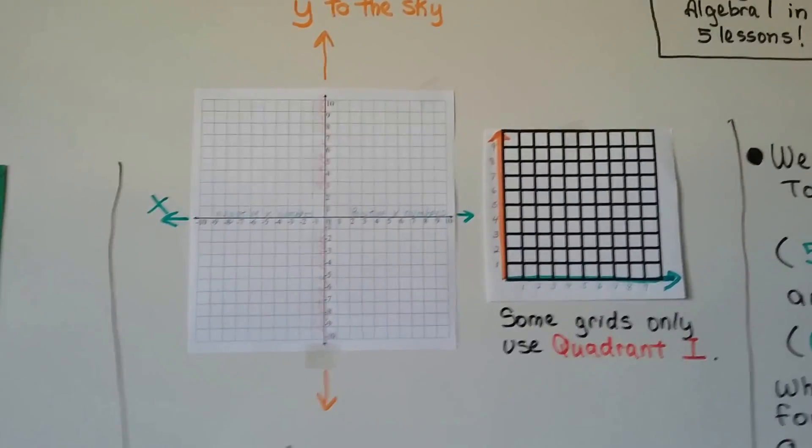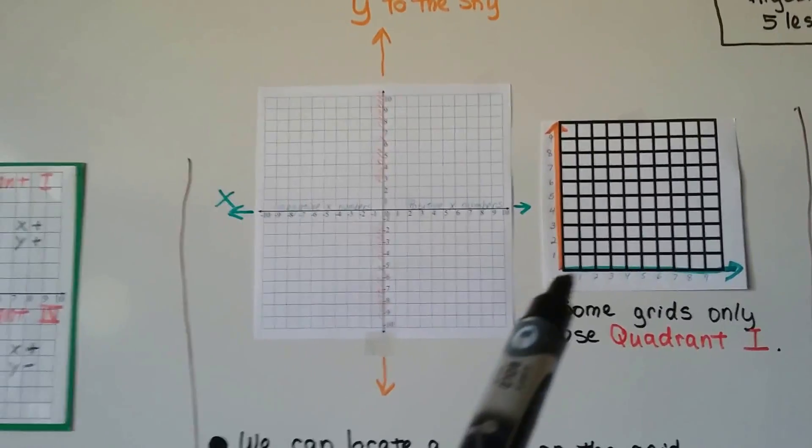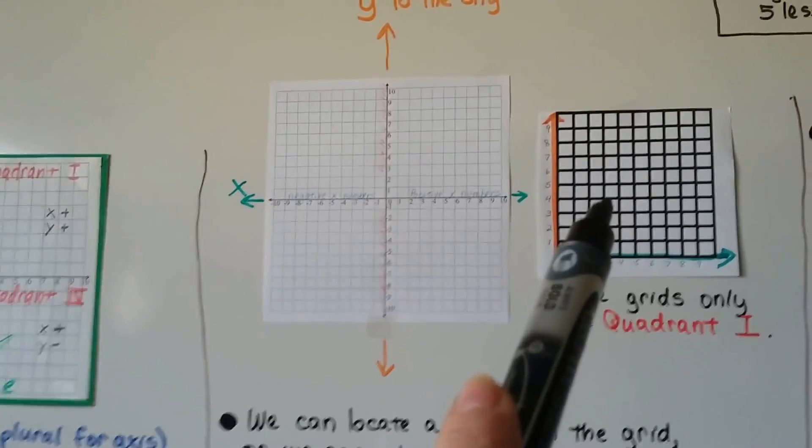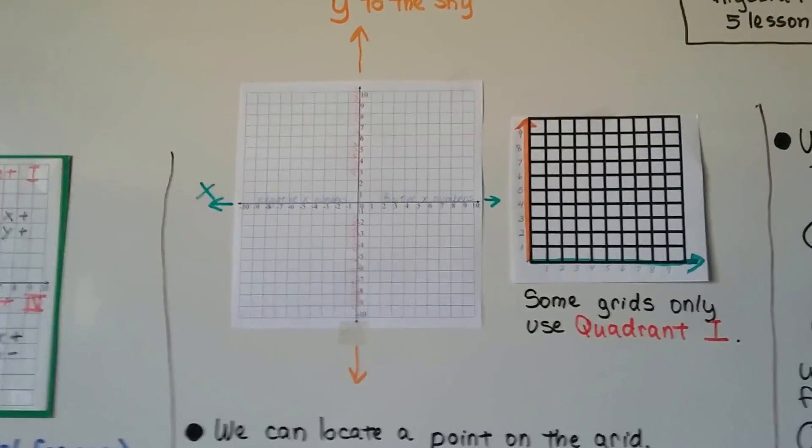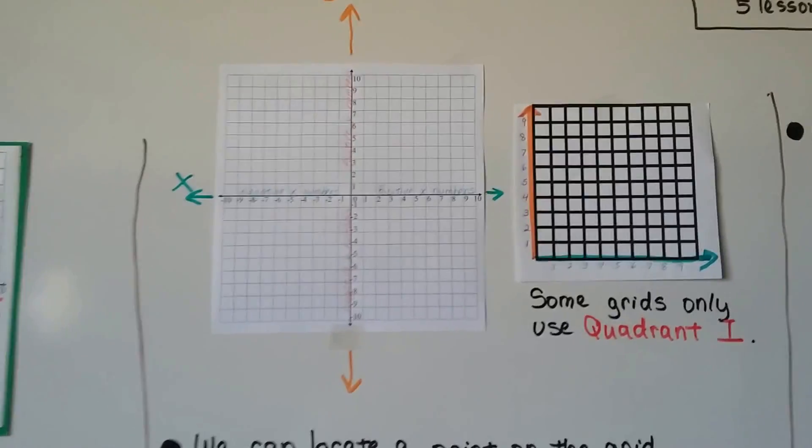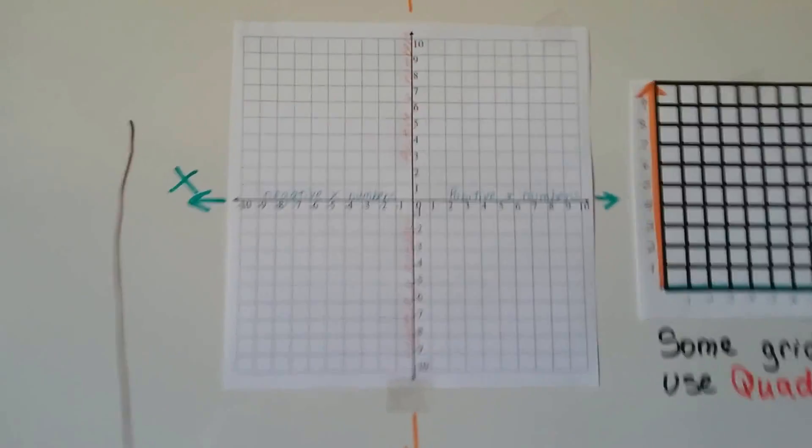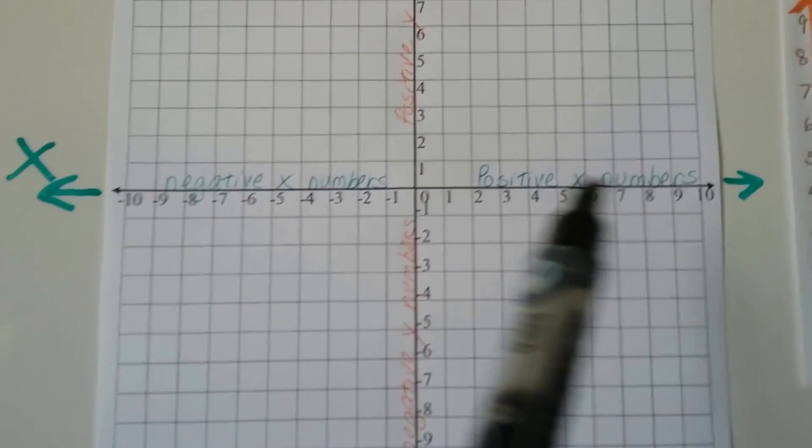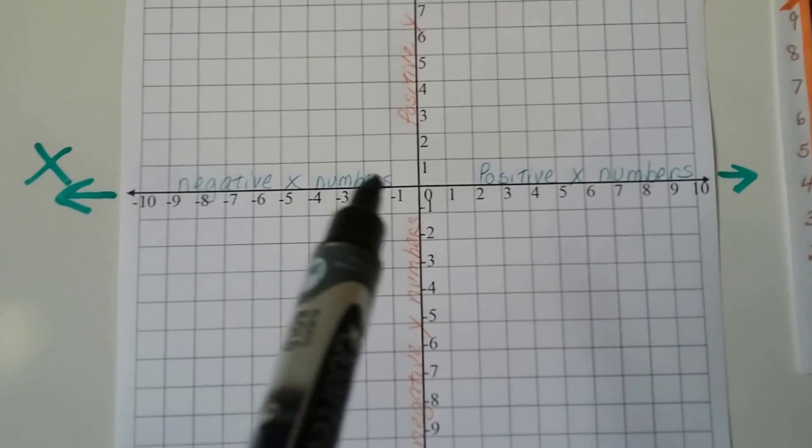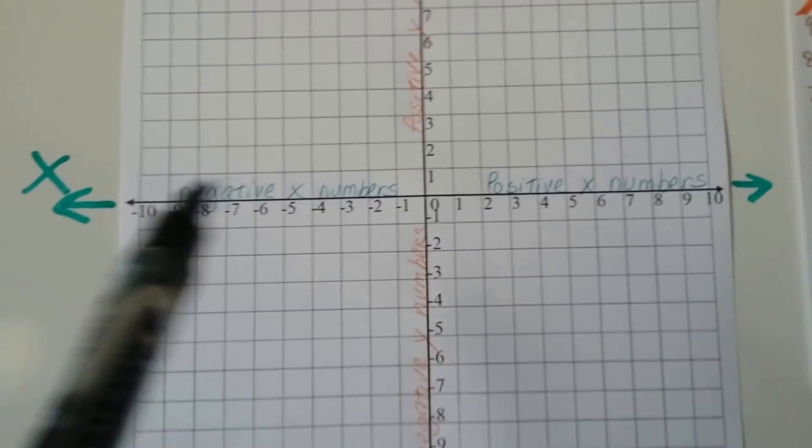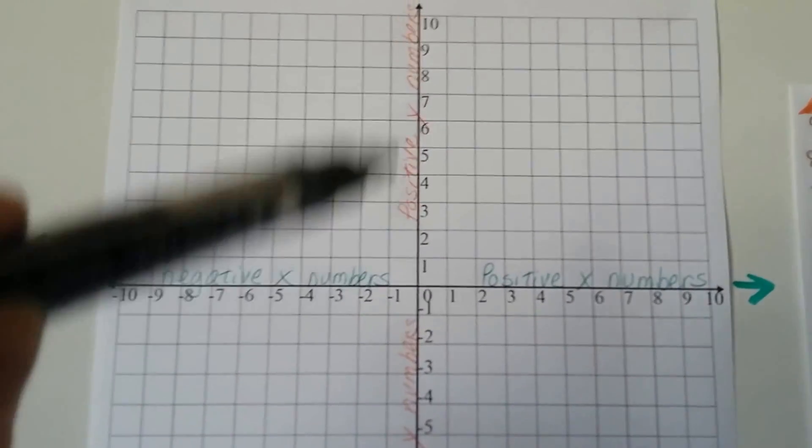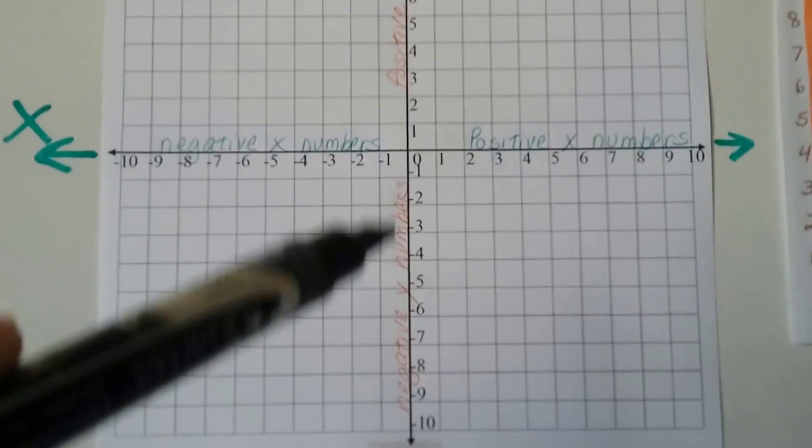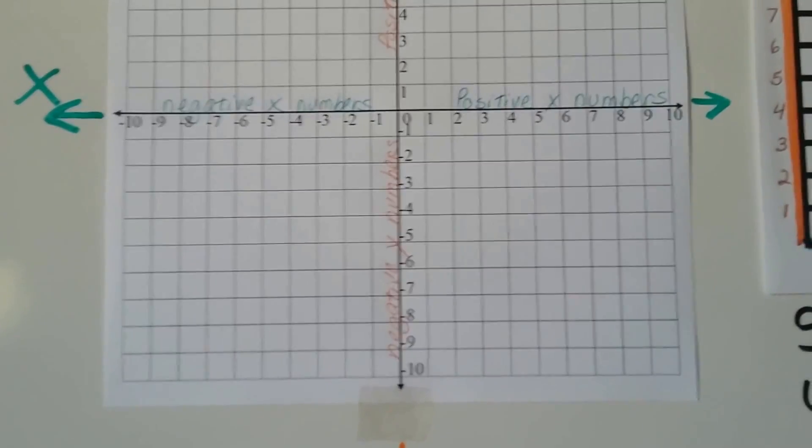Now, some grids only use quadrant one. That's quadrant one. You'll see that on graphs and tables. So for this one, if you look, we've got the positive x numbers here, the negative x numbers here, the positive y numbers here, and the negative y numbers down here.